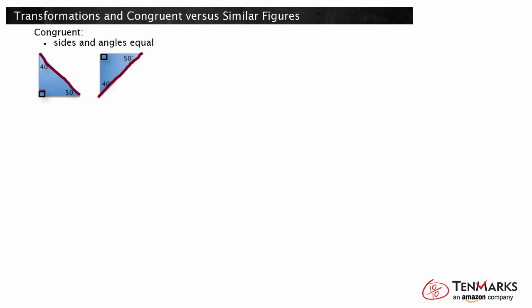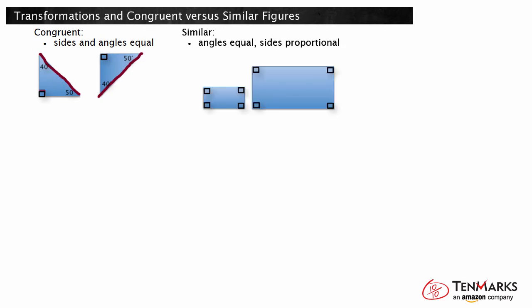Two figures are similar when their corresponding angles are equal, but the side lengths are proportional. These two rectangles are proportional. The angles are all the same since all the angles are 90 degrees. The sides of the larger rectangle are all twice the length of the sides of the smaller rectangle, so they are similar.